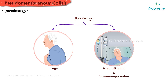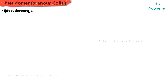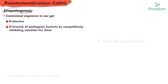Increased age, hospitalization, and immunosuppression are known risk factors. Regarding etiopathogenesis, commensal organisms in our gut are protective as they inhibit growth of pathogenic bacteria by competitively inhibiting nutrition for them and also secreting enzyme-like bacteriocin, which kills the pathogenic organisms.